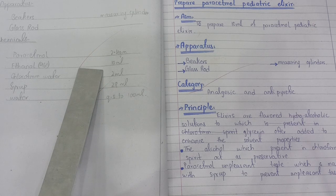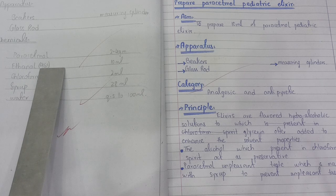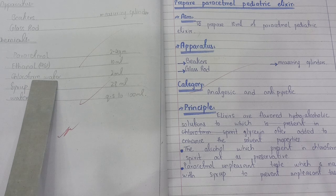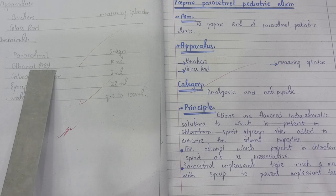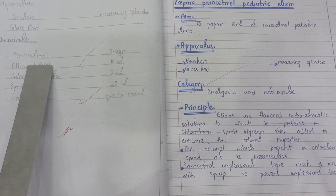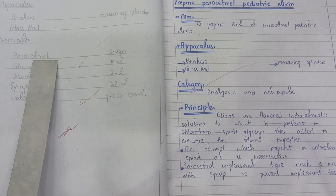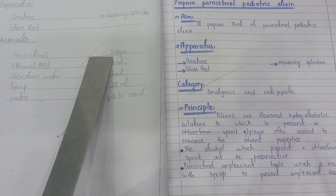For the quantities: you need 2 ml of chloroform spirit, ethanol (alcohol), and chloroform water. The active ingredient, paracetamol, is 2.4 grams.